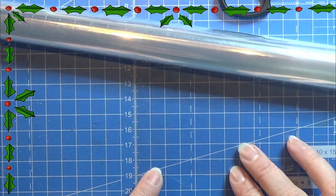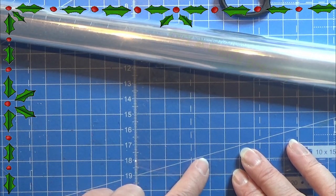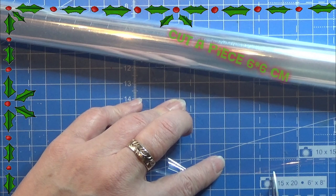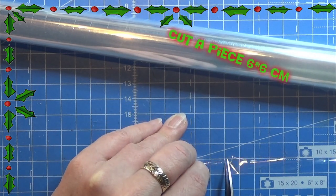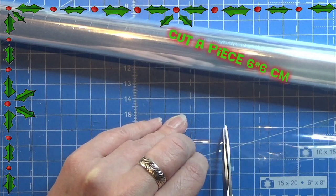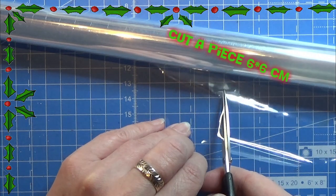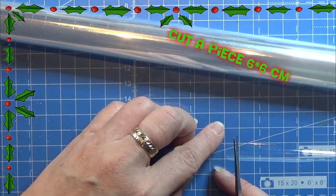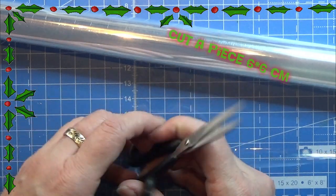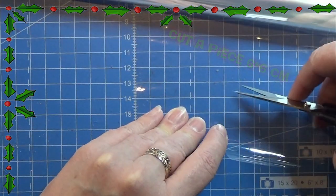For the piping bag itself I am using some cellophane. You can use some plastic from a tiny bag if you want to, but I like the way that the cellophane is working. So I'm cutting out a piece that is six centimeters by six centimeters.